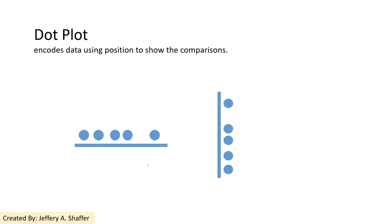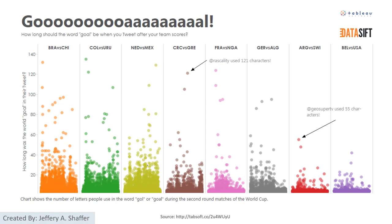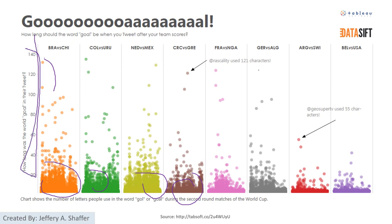The dot plot is another visualization that uses position to show comparisons. This can be from a common baseline, or it can simply show dots without a common baseline to show positions relative to each other. We can see the most common values in each category, identify outliers, and understand how data is distributed across different categories and ranges.